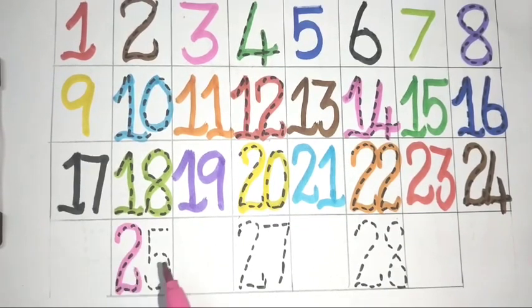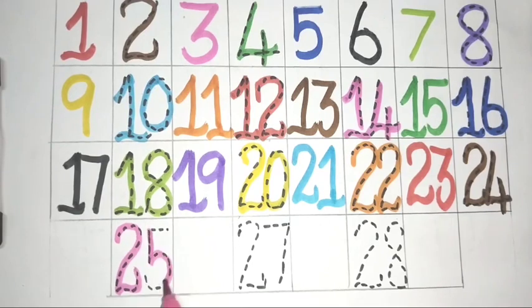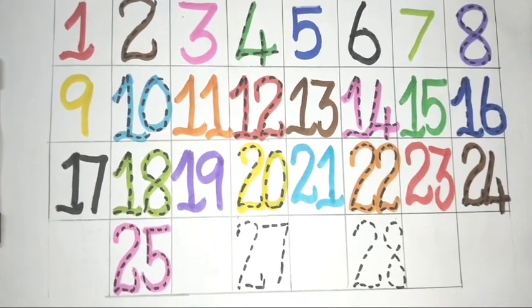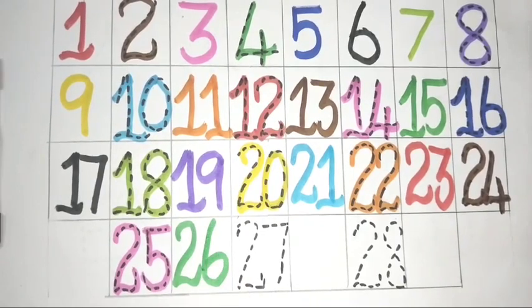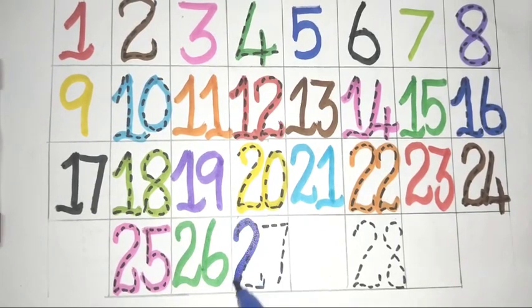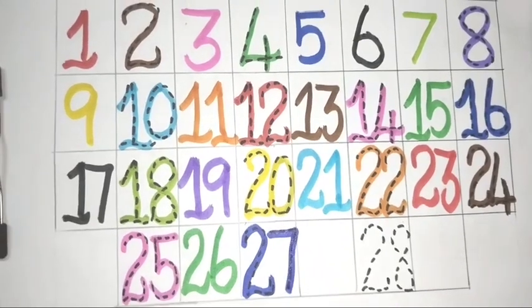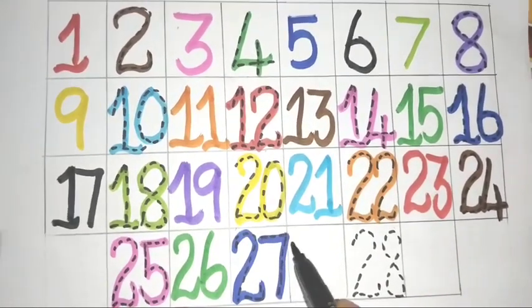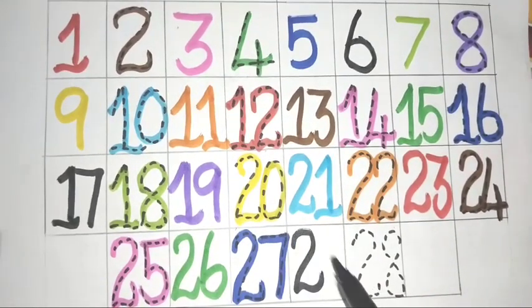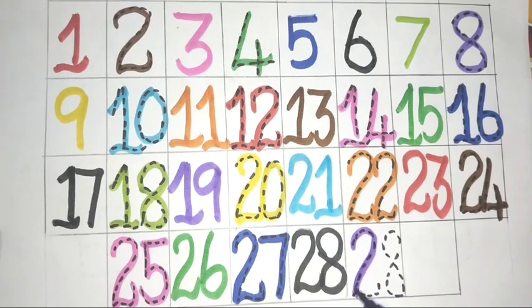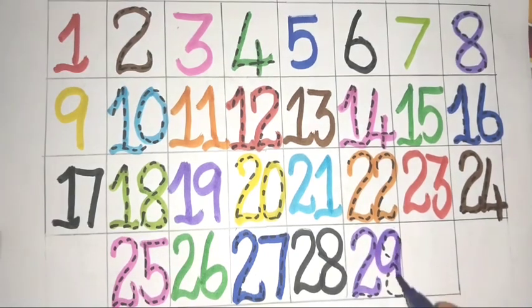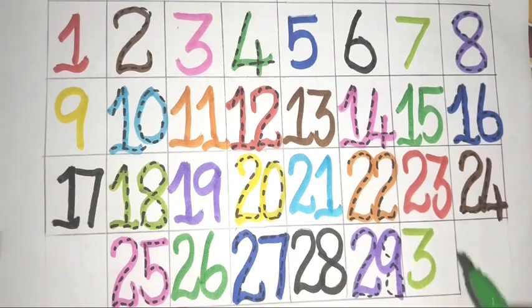2, 5, 25. 2, 6, 26. 2, 7, 27. 2, 8, 28. 2, 9, 29. 3, 0, 30.